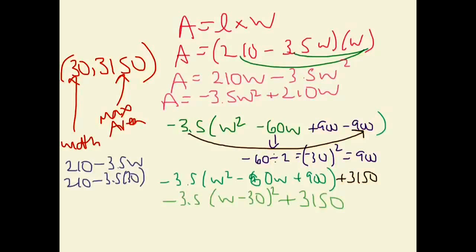So in doing that, I get a length of 105. So I know that my width is 30 meters, my length is 105 meters, and it will give me a maximum area of 3,150 meters squared.